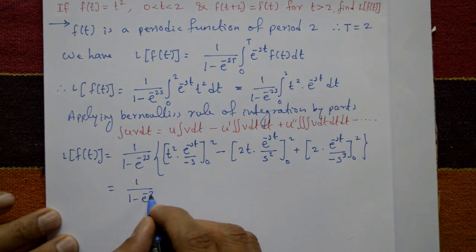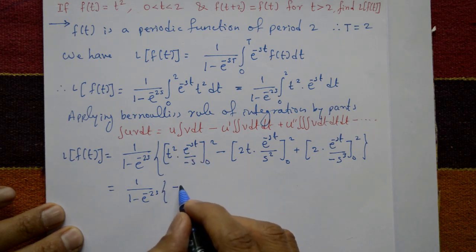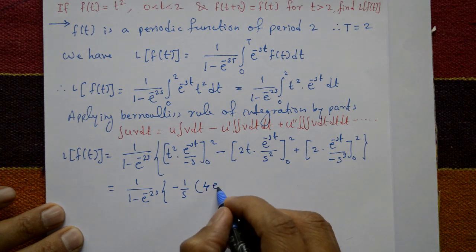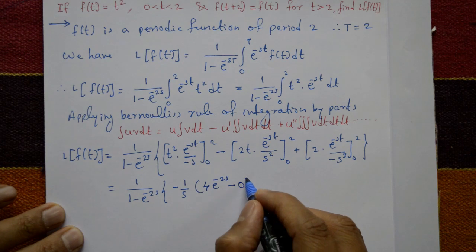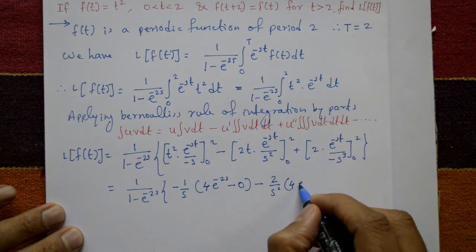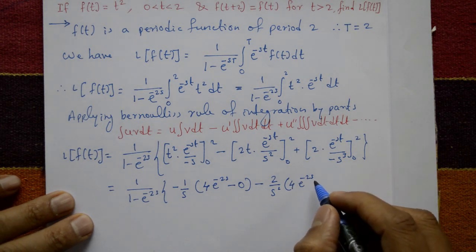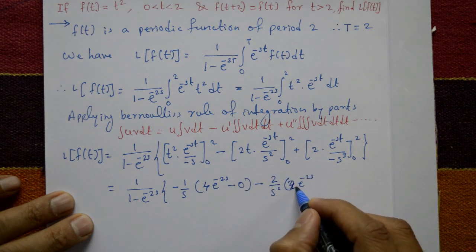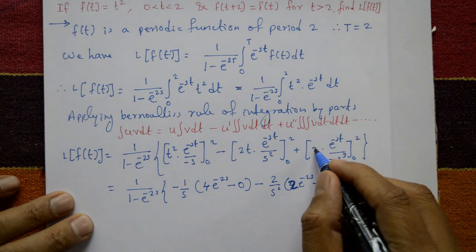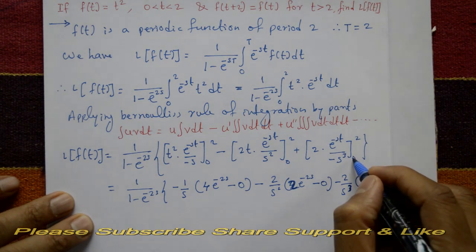This equals 1 upon 1 minus e raised to minus 2s. For the first term, minus 1 by s is outside. Apply the upper limit: t equals 2 gives t squared equals 4, and e raised to minus 2s. Minus lower limit t equals 0, giving 0. The second term: 2 by s squared is outside. Put t equals 2: 2 into 2 is 4, and e raised to minus 2s. Taking 2 outside, we get 2 times e raised to minus 2s. Lower limit t equals 0 gives 0. e raised to 0 is 1.